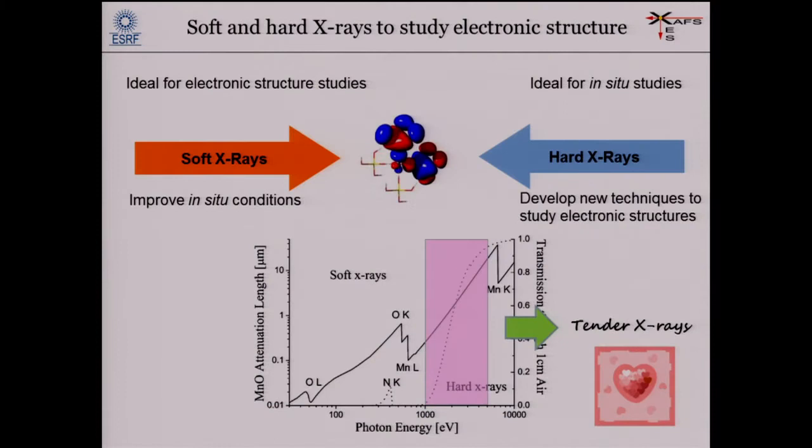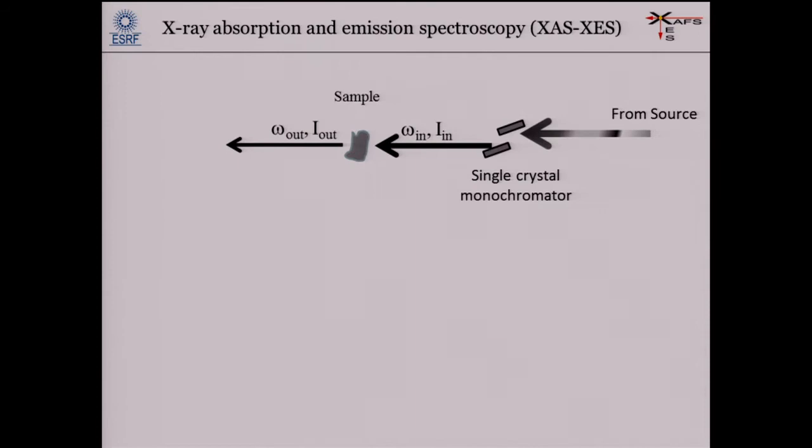The energy range above 1,000 and below 5,000 electron volts is referred to by some people as the tender X-ray range — it's in between soft and hard X-rays. I think people in Paris came up with this, which shows that scientists also have a romantic streak.